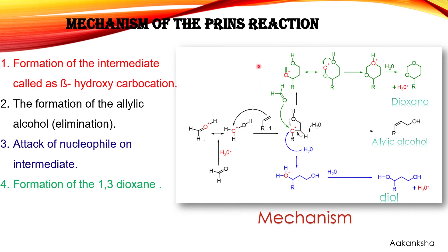The third pathway is the formation of 1,3-dioxane. In the presence of excess formaldehyde, the formaldehyde itself acts as the nucleophile. Attack of the nucleophile on the carbocation takes place, the ring closure reaction occurs, and after elimination of a proton — with H₃O⁺ as the side product — we get the dioxane as the product.